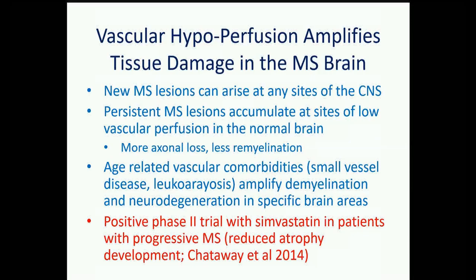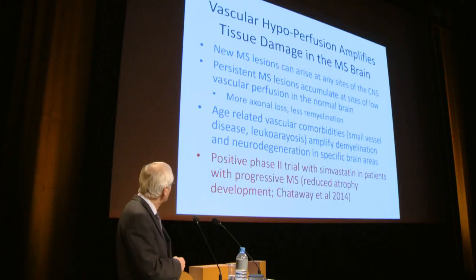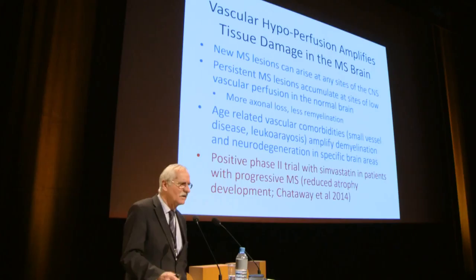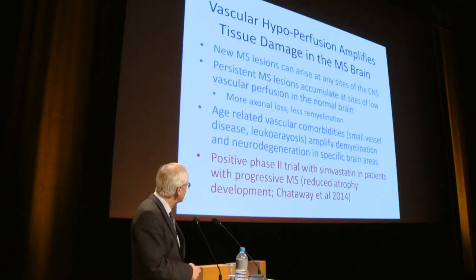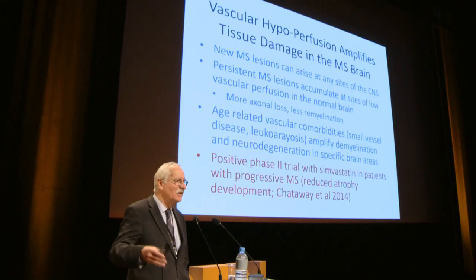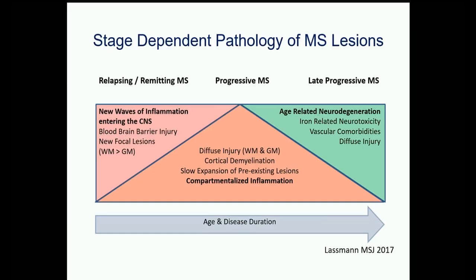New MS lesions can arise anywhere, but persistent ones accumulate at sites of low vascular perfusion due to more axonal loss and less remyelination. Age-related vascular comorbidities amplify neurodegeneration, possibly also demyelination. This may explain part of the mechanism of the simvastatin trial showing reduced atrophy development — potentially by treating vascular comorbidities in these patients.